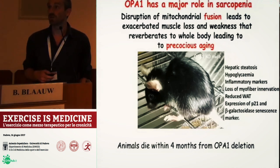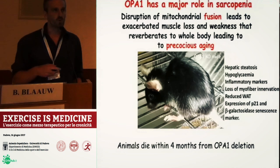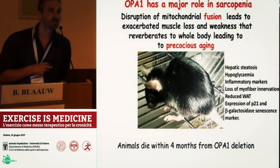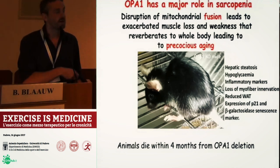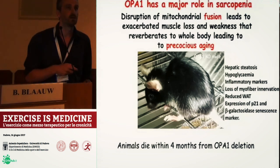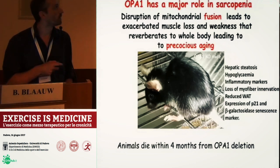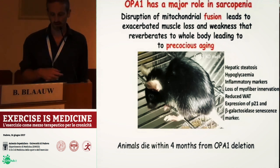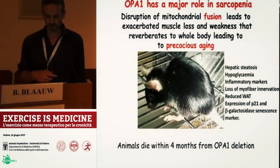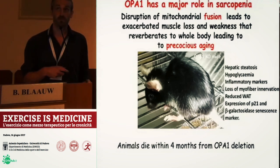But what about whole body aging? Interestingly, what we found is that when you take OPA1 only from skeletal muscles, these mice actually generate a whole body systemic aging. We had different markers which were indications of whole body systemic aging — problems in the liver, blood sugar levels, inflammation, and innervation: myofibers are actually losing innervation, which is becoming more and more a key part of sarcopenia.